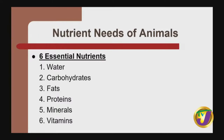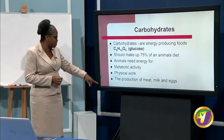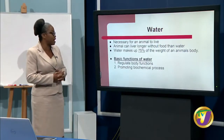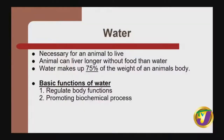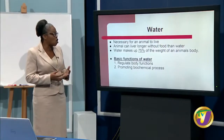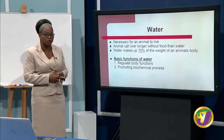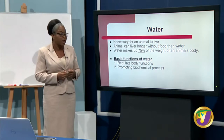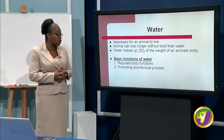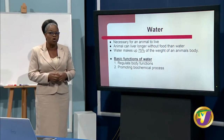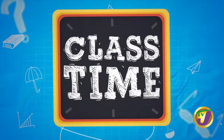Water is very important for animals — it is necessary for them to live. Water makes up 75% of the weight of an animal's body, and animals can live longer without food than without water. Water is important because it allows animals to carry out their biochemical processes and also to regulate their body functions.